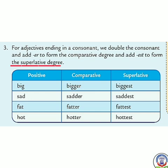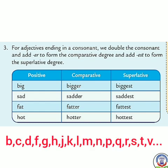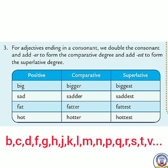Aapko maloom hai consonants konse hoti hain? B, C, D, F, G, J, K, L, M, N, P, Q, R, S, T, V. Baaki jo letters hote hain alphabet mein, woh vowels hote hain: A, E, I, O, U.